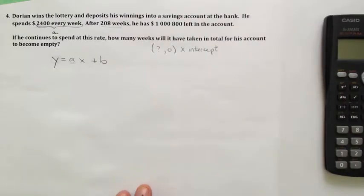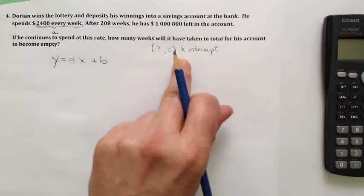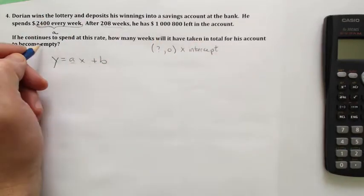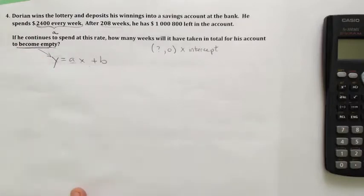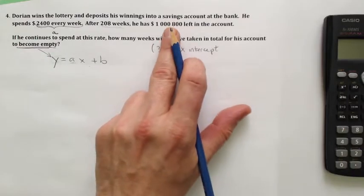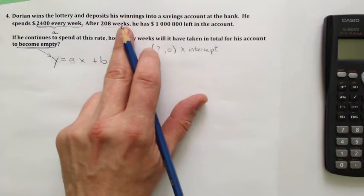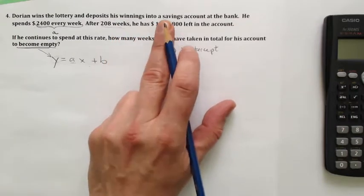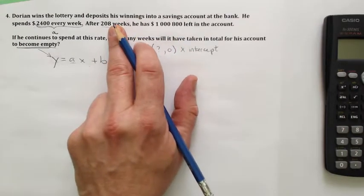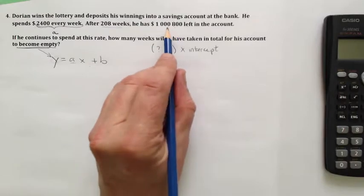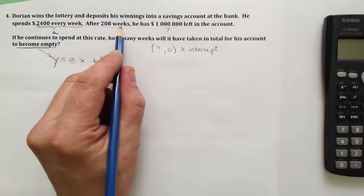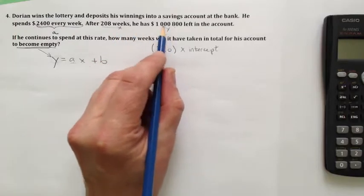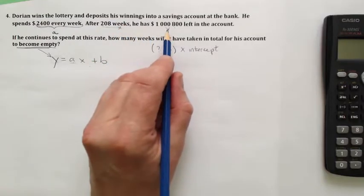Now if that's not too clear to you in terms of what it looks like on a graph with intercepts, don't worry about it too much. The big thing you need to realize is the account becoming empty means Y becoming zero. The amount of money in his account is the Y—how much money is in his account depends upon how many weeks go by. This is the dependent variable and this is the independent variable. The number of weeks that pass, this one depends on this one, therefore this is dependent.